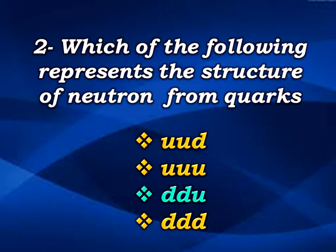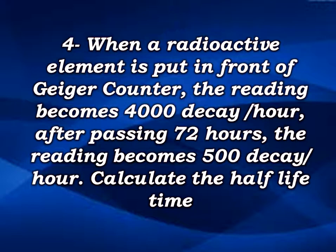The next question is a half-life problem. When a radioactive element is placed in front of a Geiger counter, the reading is 4,000 decay per hour. After 72 hours, the reading becomes 500 decay per hour. We need to calculate the half-life.